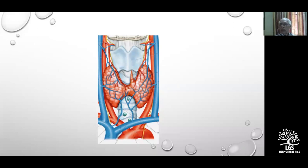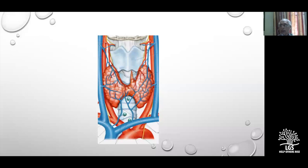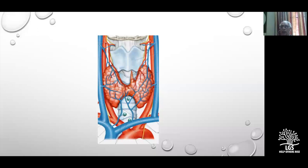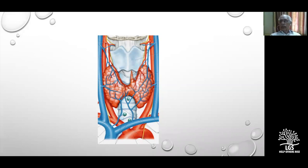Once through the investing layer and the potential gap between the strap muscles, you separate the strap muscles and incise the so-called false capsule to expose the gland. Your incision must cut through the investing layer, separate the strap muscles, and get into the plane between the strap muscles and the false capsule — which is derived from the pretracheal fascia.